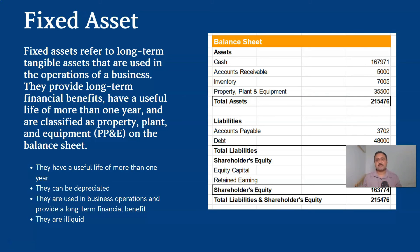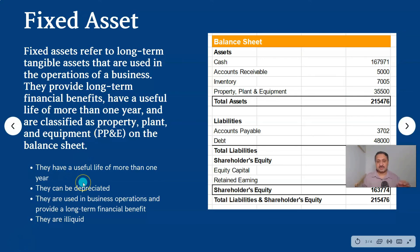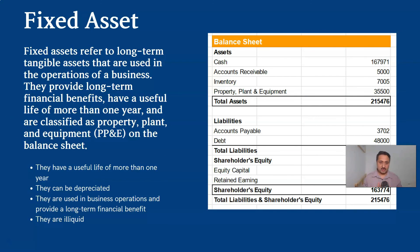Examples of fixed assets include land, machinery, vehicles, tractors, and cars. In the next video, I will show you how we acquire a fixed asset in the D365 for Finance and Operations module.